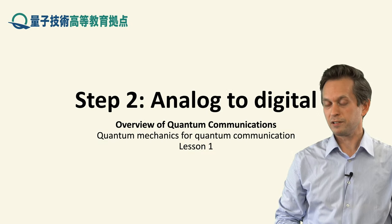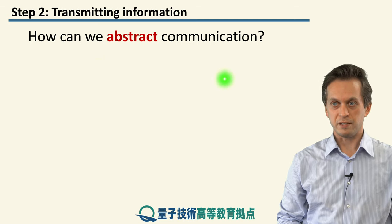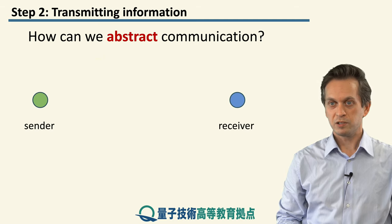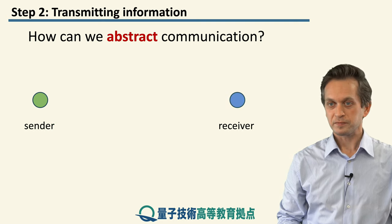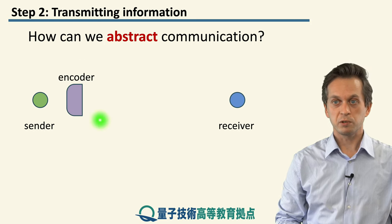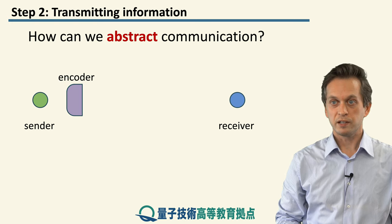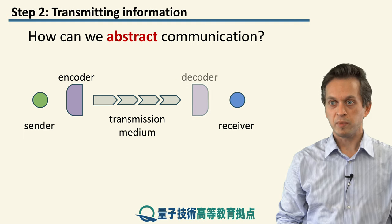Step 2: Analog to digital. In this step we will discuss how to send signals. First, let's begin by trying to abstract what communication is. Usually we have somebody who is trying to send a message to a certain recipient. What we have to do with the message is encode it into some suitable form that can be transmitted through a medium, and then on the other hand decoded by the receiver and read out.